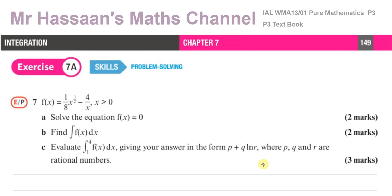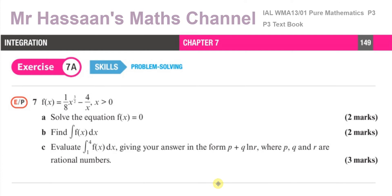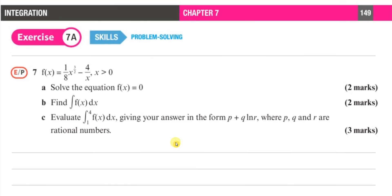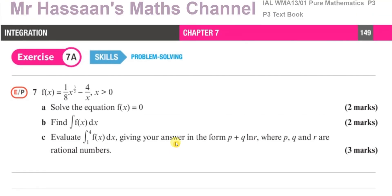For question number 7 from the same exercise, I've also been asked to solve this question. There are parts 7a, b, and c. Starting with 7a: solve the equation f(x) = 0, where f(x) equals 1 over 8 times x to the power of 3 over 2, minus 4 over x, and x is greater than 0.